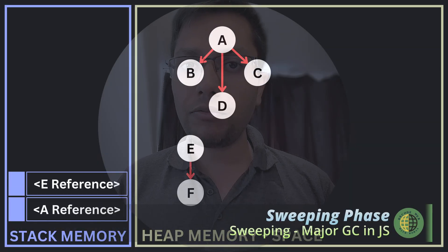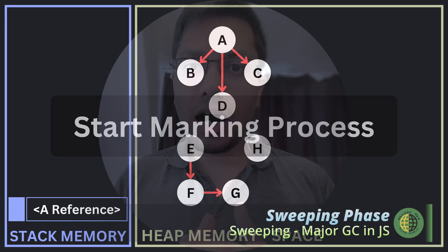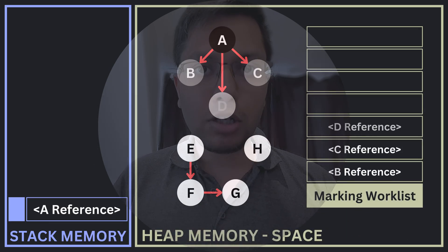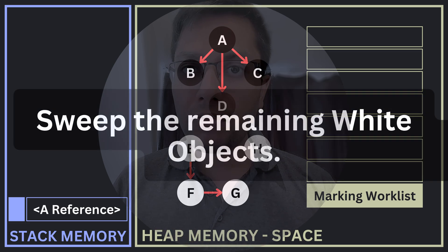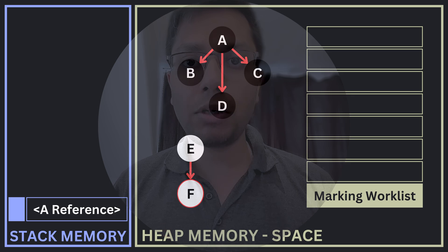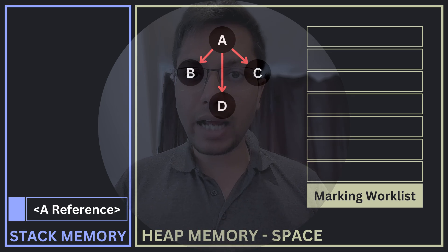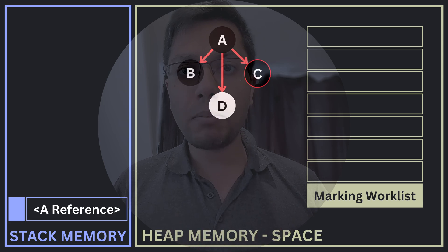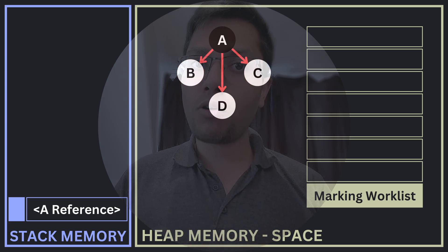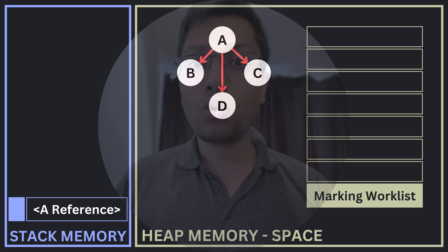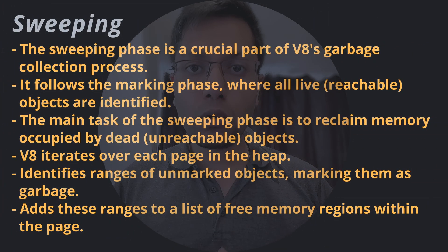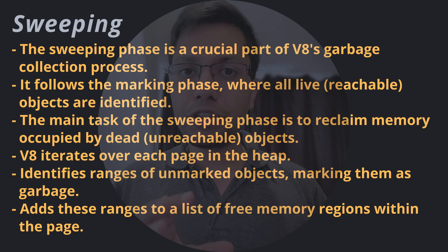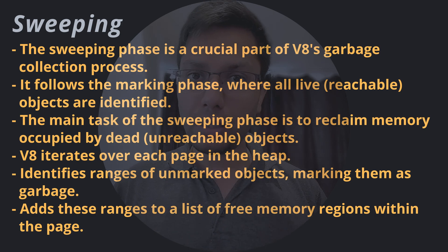The sweeping phase is part of the V8 garbage collection process. After the marking process is complete, the reachable or live objects are marked. After that, the sweeping phase is responsible for reclaiming the memory occupied by the dead or unreachable objects. In this phase, V8 iterates over the marking bitmap of each page in the heap to find ranges of unmarked objects — portions in memory occupied by objects no longer reachable from any roots, and therefore considered garbage. For each range of unmarked objects found, the space is added to a list of free regions within the page.